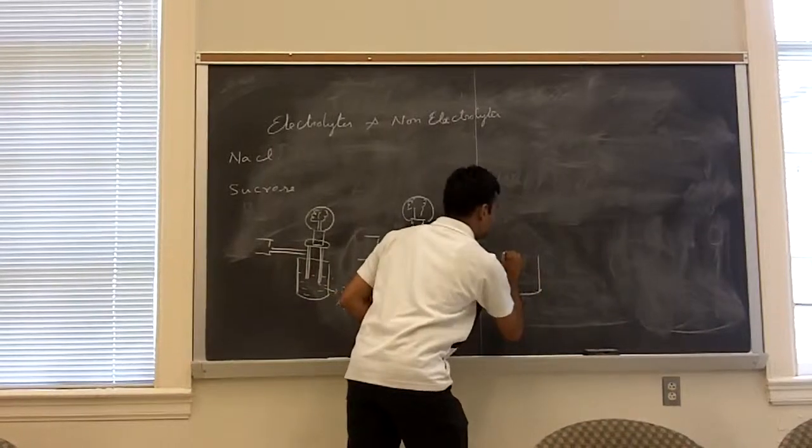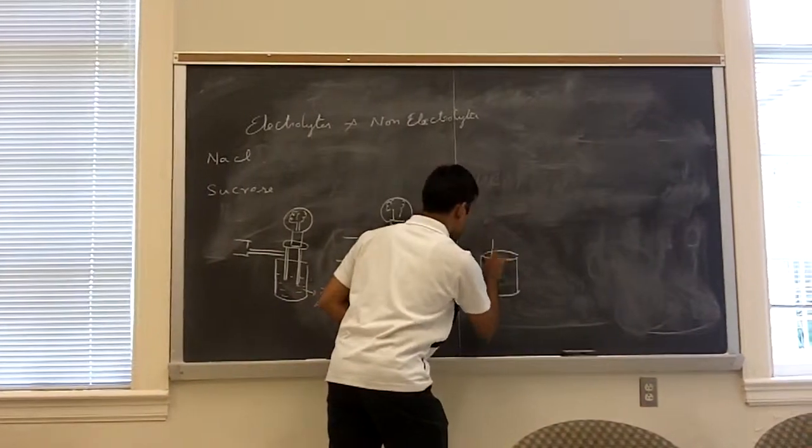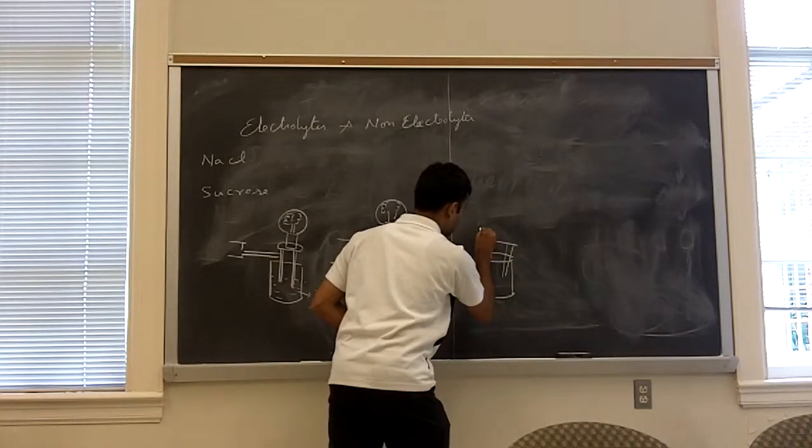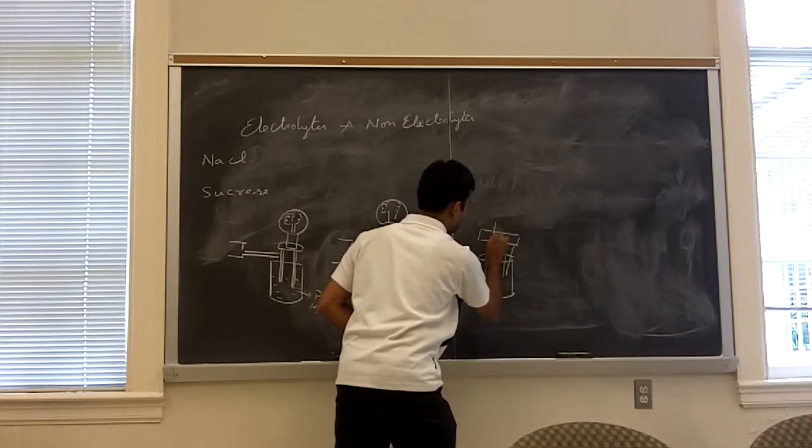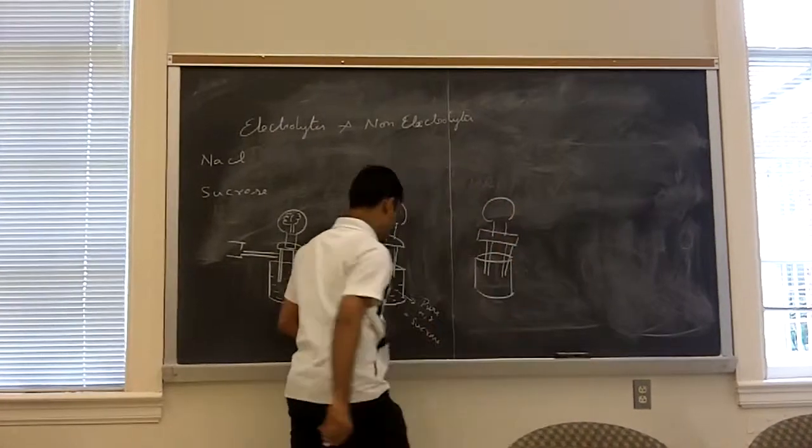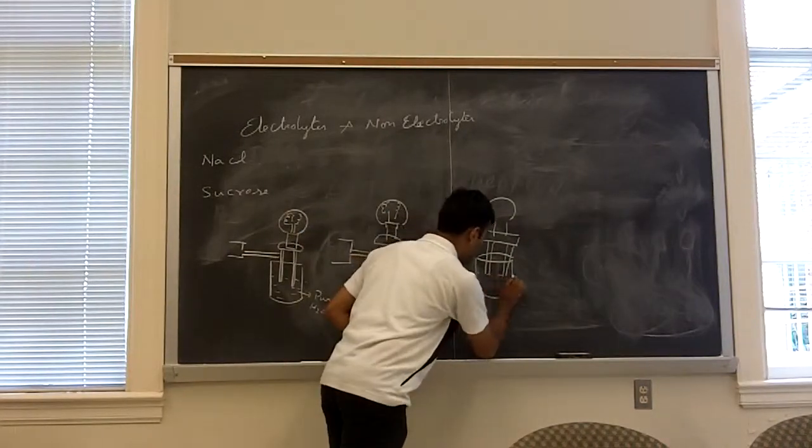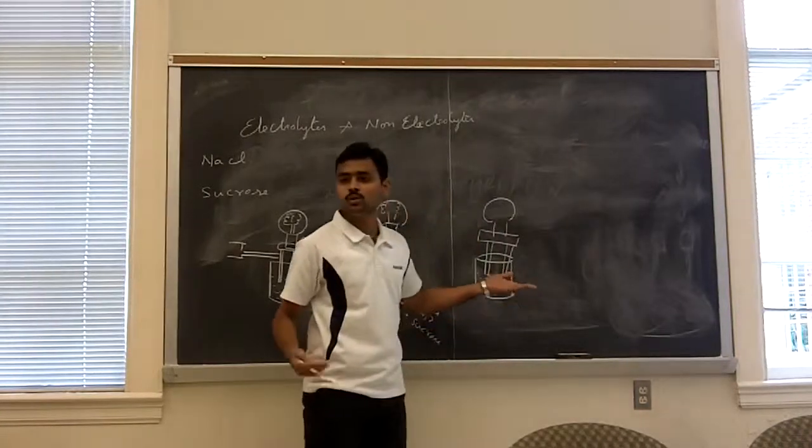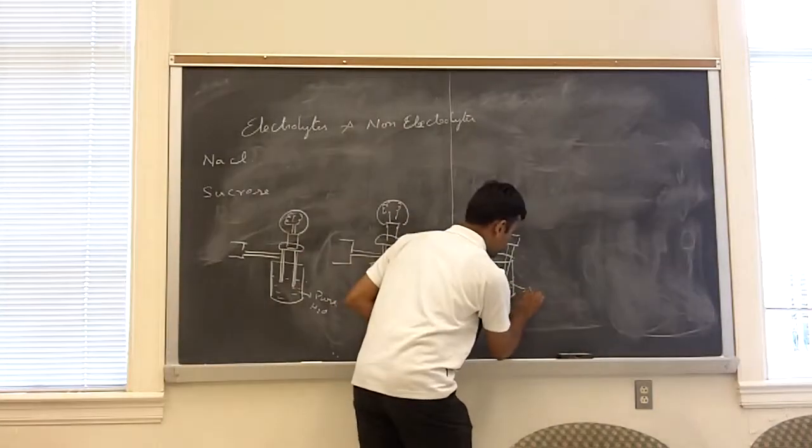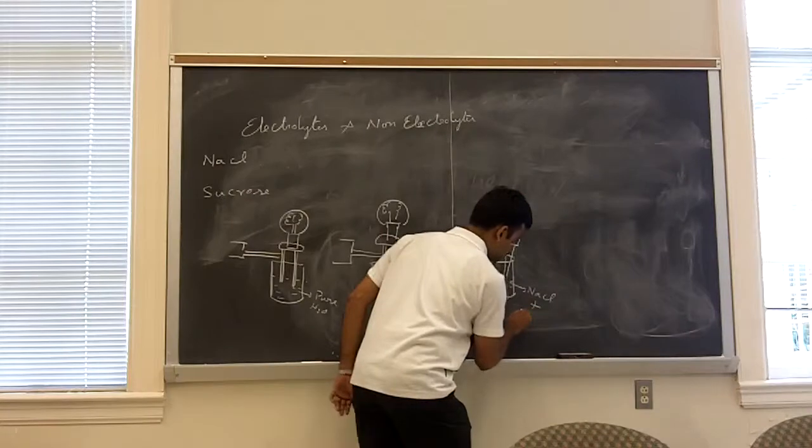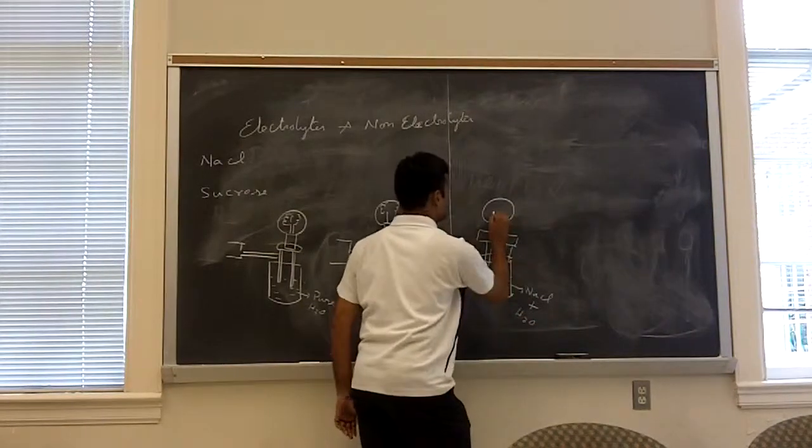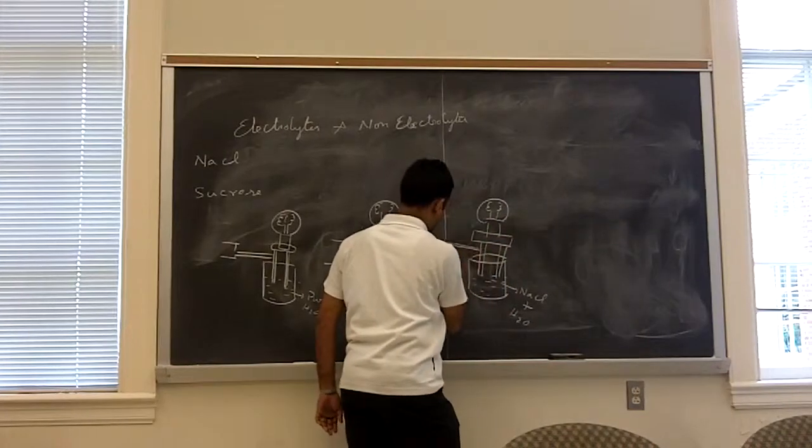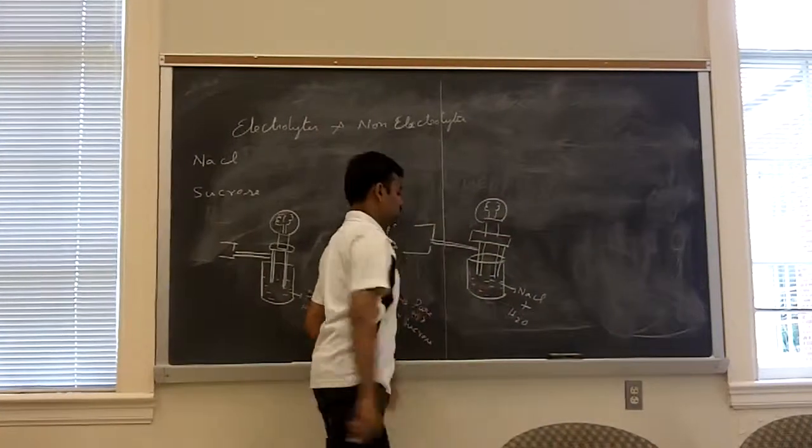Right. The final one. And the other beaker contains same solution except it has got, instead of sucrose, it has got sodium chloride into it. Which is literally I add salt to a water solution. So NaCl plus water. Right? And the setup is literally the same.